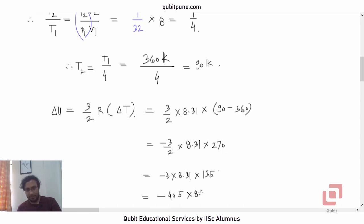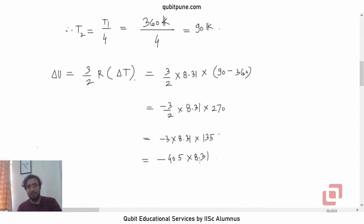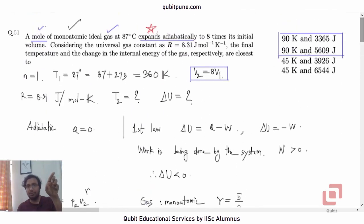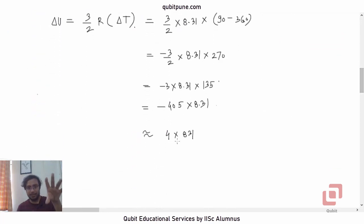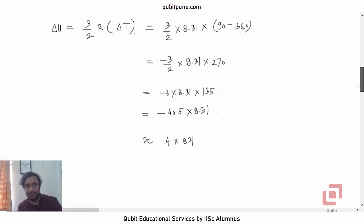Now let's go to the options. This is 8.31, so we can approximate this as 4 × 831, roughly. This is definitely not going to cross 4000 because 0.05 is not going to contribute much. So it will be 4 × 831, approximately. So the answer closest to that will be 3365.